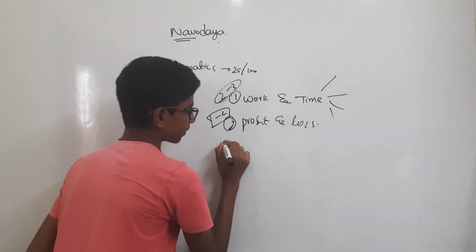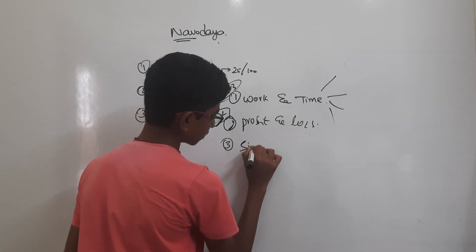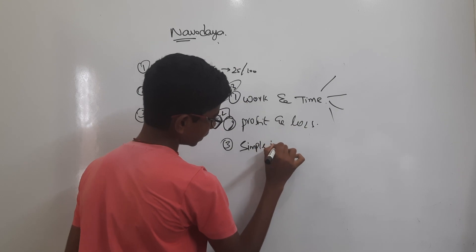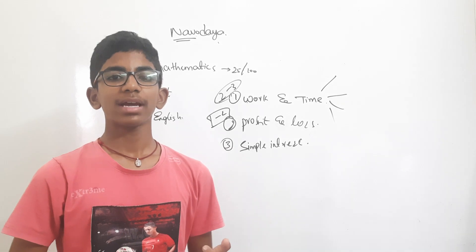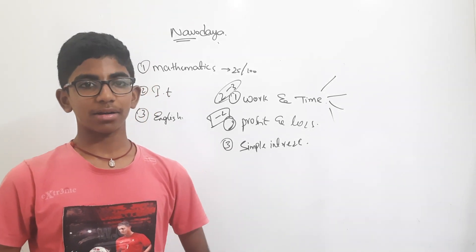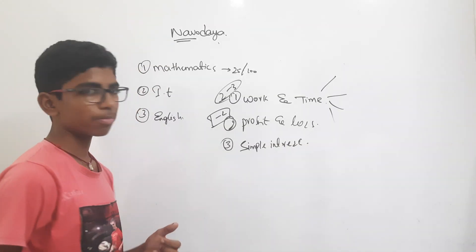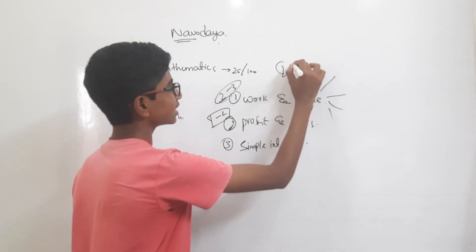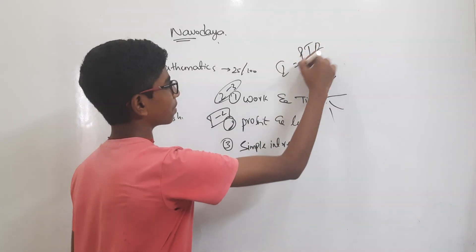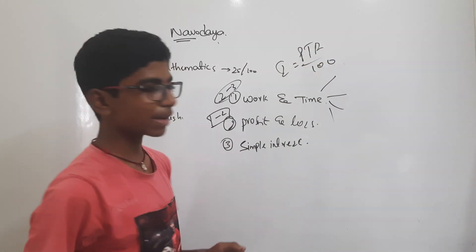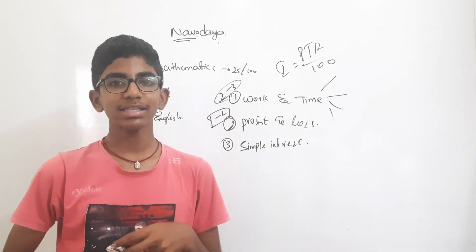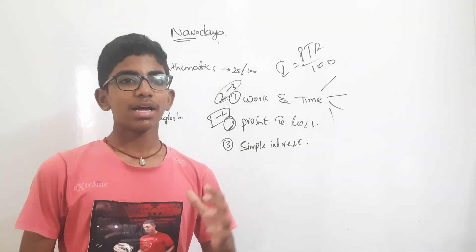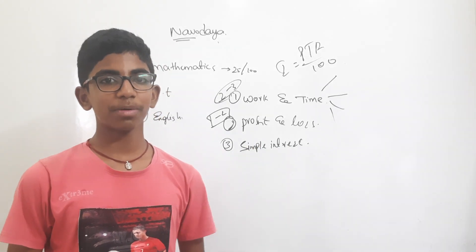Next, the third one is Simple Interest. Simple Interest is also a very important lesson. In this lesson there are only some simple formulas. Interest equals PTR by 100. From this formula we can derive many formulas. We have to learn this Simple Interest lesson thoroughly.